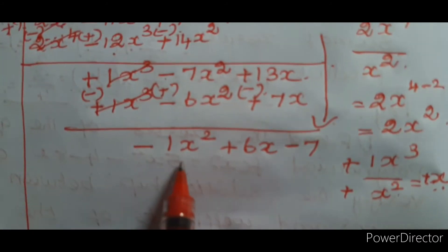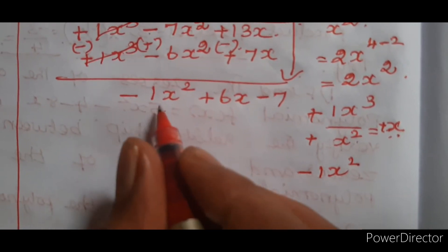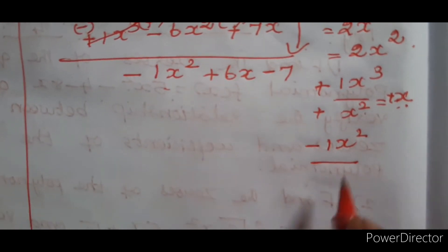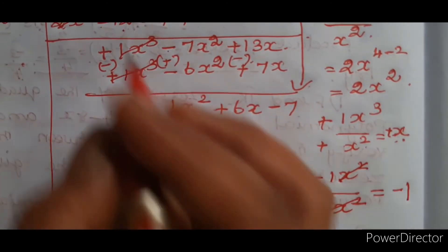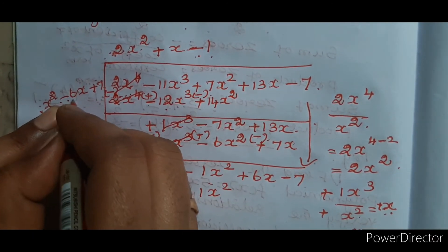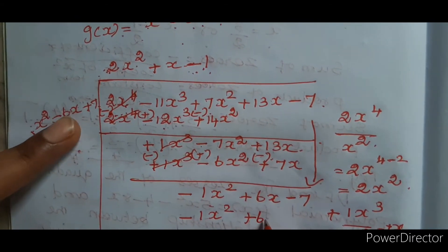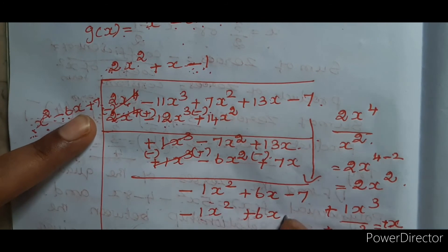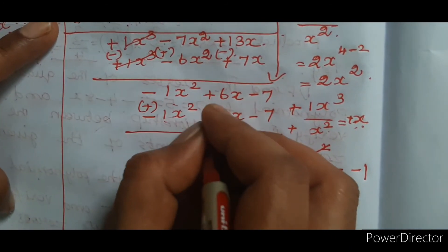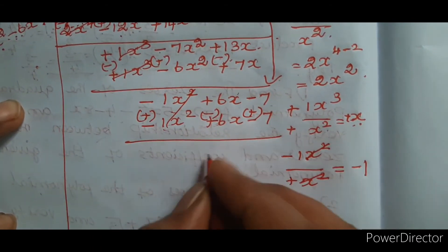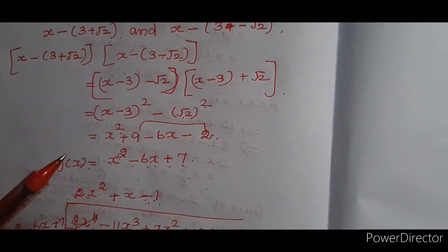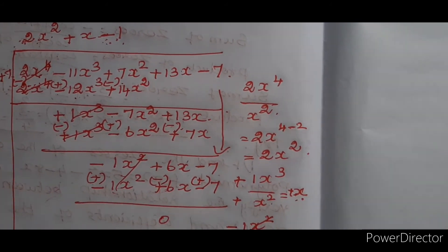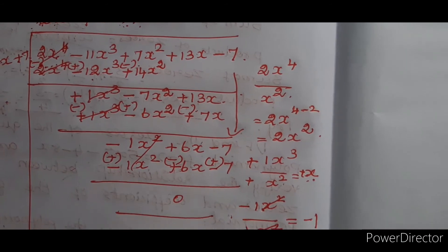The highest term is minus x². Dividing minus x² by x² gives minus 1. Multiplying minus 1 by the divisor: minus x² plus 6x minus 7. Changing sign and subtracting, both terms cancel and we get remainder 0. Since the remainder is 0, x² minus 6x plus 7 is confirmed as a factor of the polynomial.